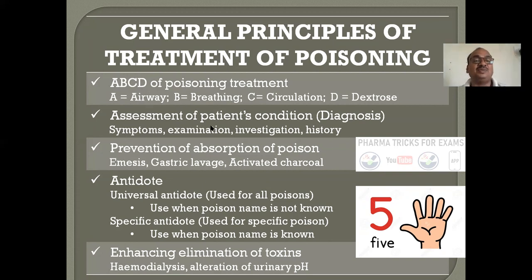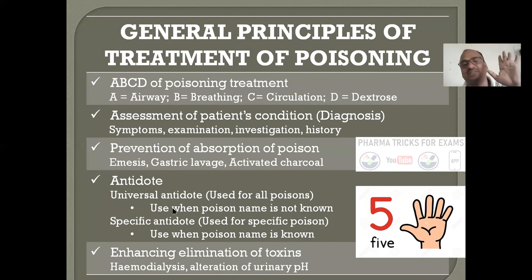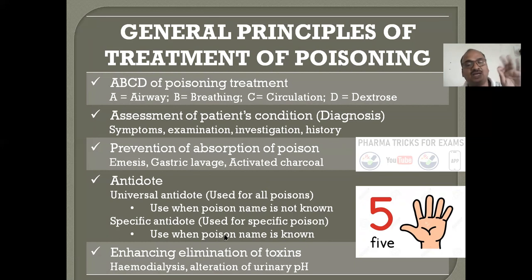Each one I will disclose in separate slides. Assessment of the patient condition: diagnosis, what are the symptoms, examination — you have to do investigation and history. One side you have to give treatment ABCD, another side investigation is going on. Next is prevention of absorption of poisoning into the body, like emesis. Otherwise absorption will take place. Gastric cleaning, activated charcoal — it can be used. Antidote is just like an elixir for poison. Universal antidote is also there — used for all poisons. And a specific antidote is used for specific poisons. If you don't know the poison name, go for universal antidote. Enhancing the elimination of toxins from the body by hemodialysis, alteration of the urinary pH, etc.